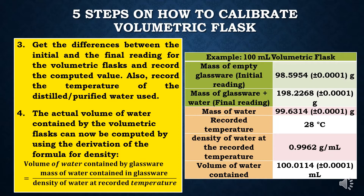Step 4: the actual volume of water contained by the volumetric flask can now be computed using the derivation of the formula for density. Volume is equal to the computed mass or weight of water contained in the glassware divided by the density of water at the specified temperature. Since the recorded temperature of water is 28 degrees Celsius, it has a corresponding density of 0.9962 grams per ml.